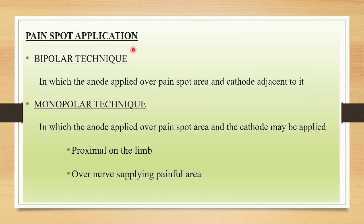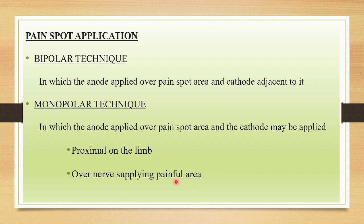For pain support application, we can use bipolar or monopolar technique. In bipolar technique, the anode is applied over the pain area and cathode is applied near to it. In monopolar technique, the active electrode or anode is applied over the pain area and the cathode is applied proximal on the limb or over the nerve supplying the painful area.